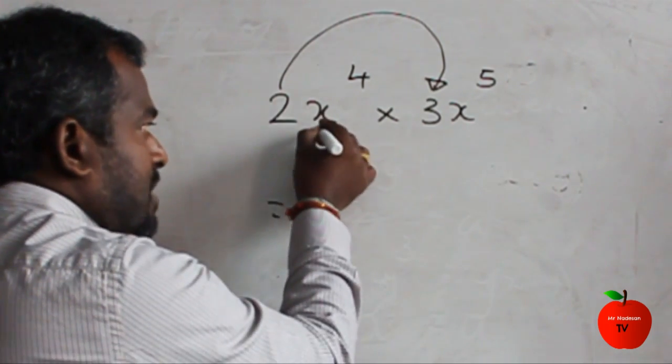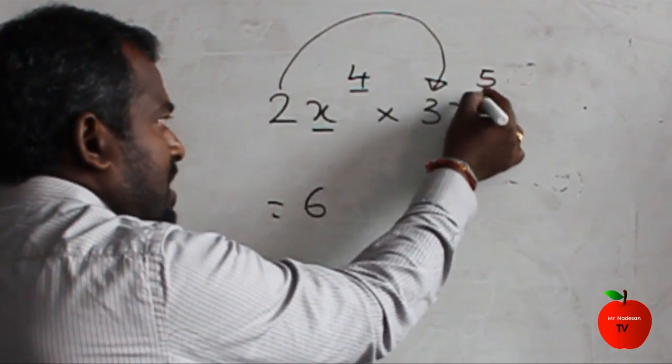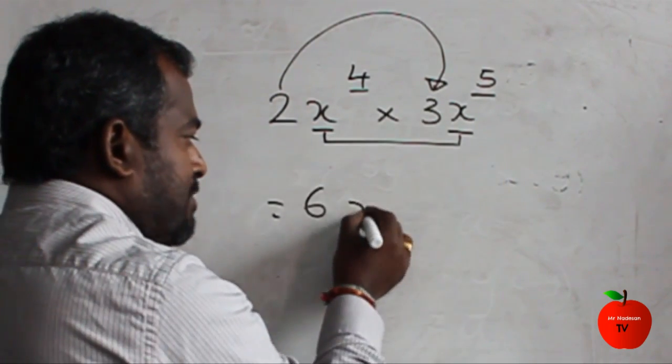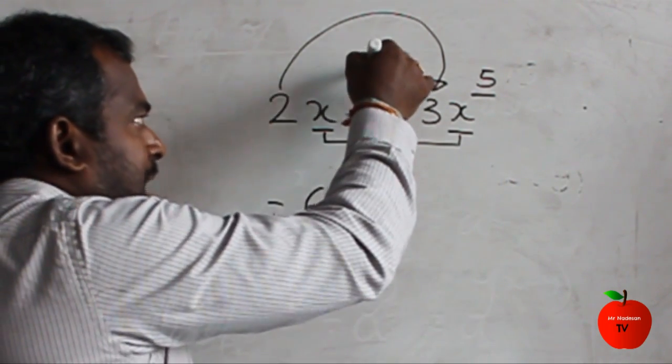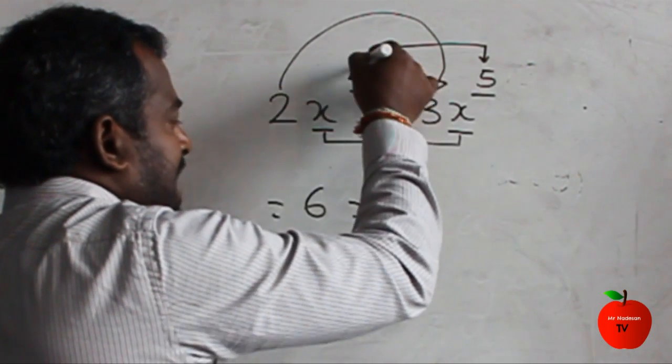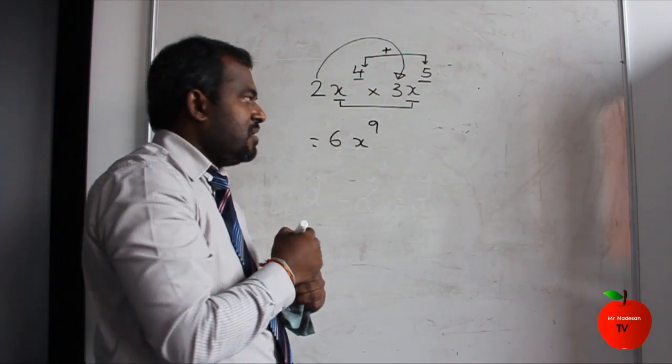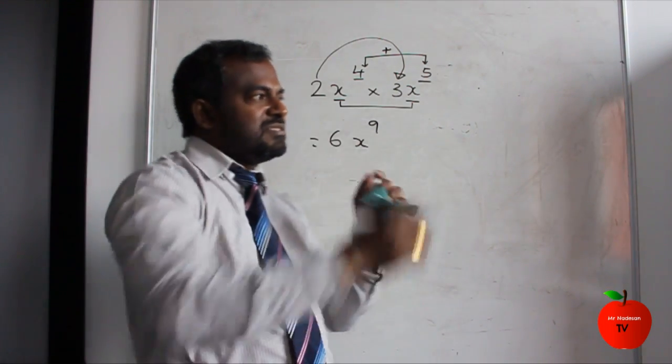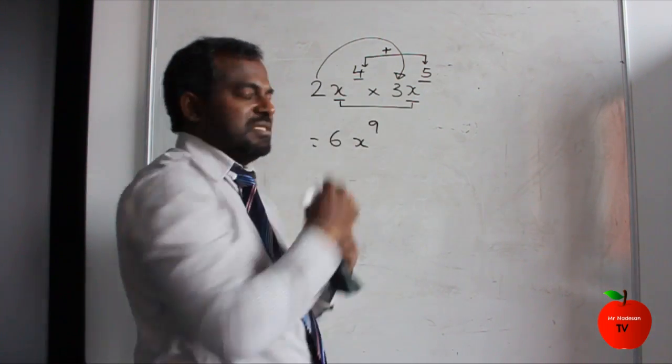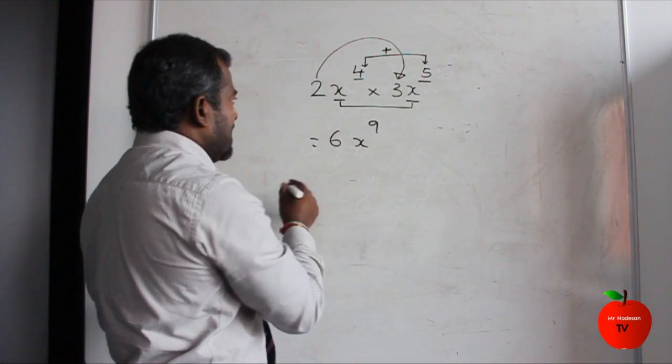Now we think about the base and the power. Here, the base is x. So we've got the same base x. Now what will happen to these two powers? We just add them together: 4 plus 5 equals 9. So the earlier question we did was straightforward with only letters, now with numbers. It's exactly the same thing.